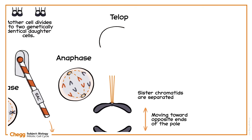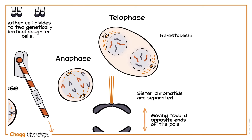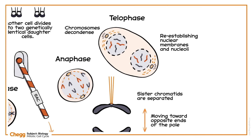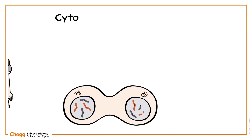Finally, in telophase, the cell structures start re-establishing their nuclear membranes and nucleoli while chromosomes begin to decondense. After all of this, the cell undergoes cytokinesis.